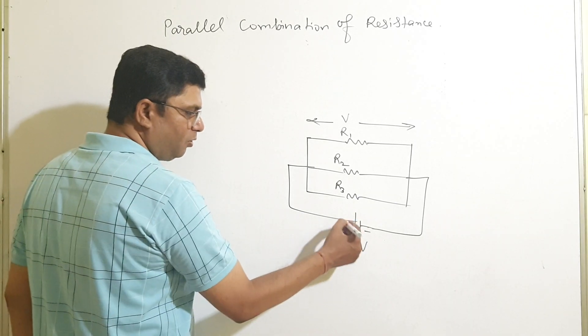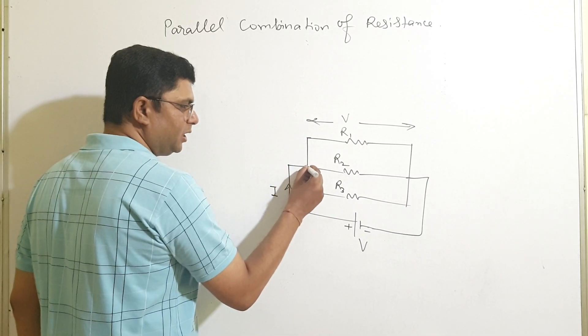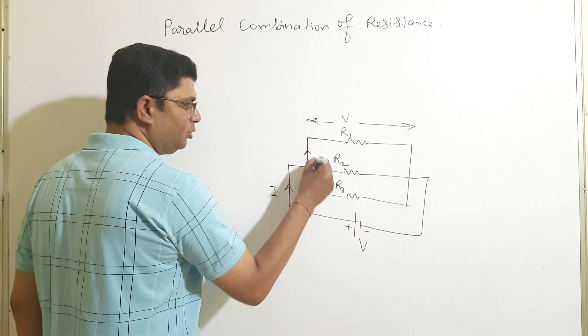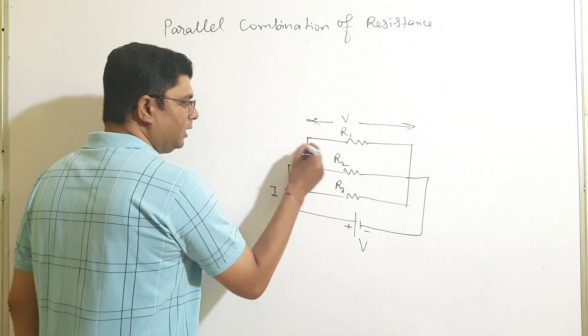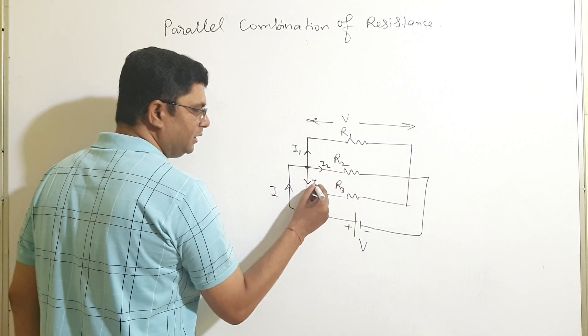Now current from this potential is I. When this current reaches this junction, this will be divided into 3 parts. Let this is I1, this is I2, this is I3.